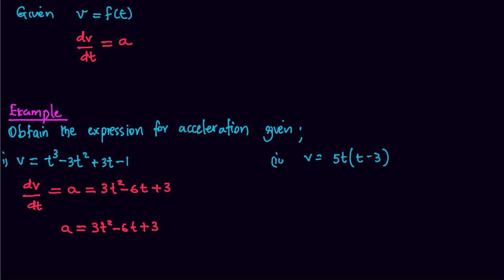Similarly, for the second case, v equals 5t squared minus 15t. Differentiating, dv over dt is equal to 10t minus 15, and this is equal to acceleration. So a equals 10t minus 15.